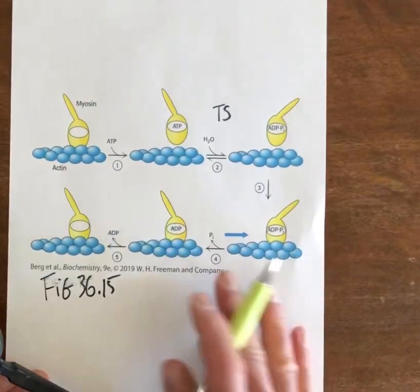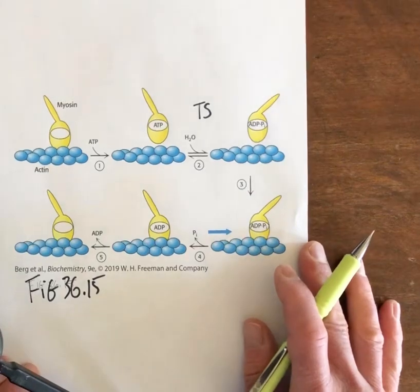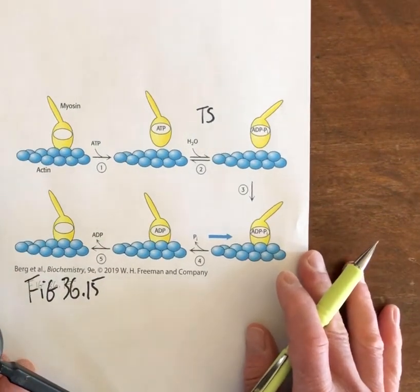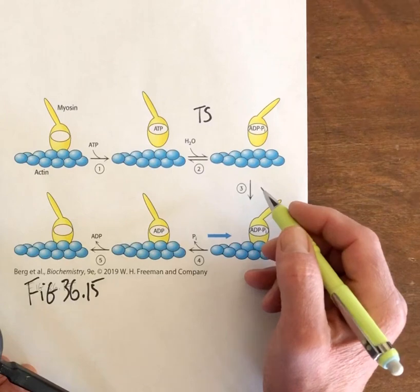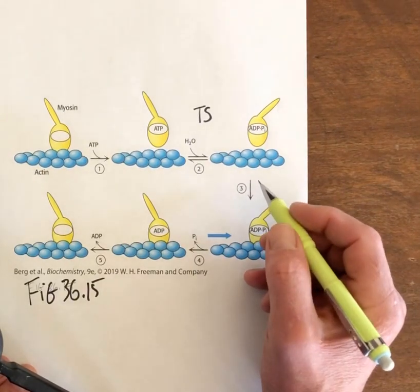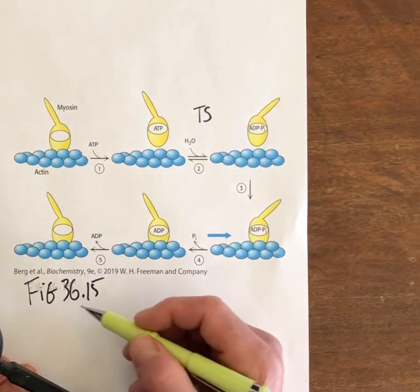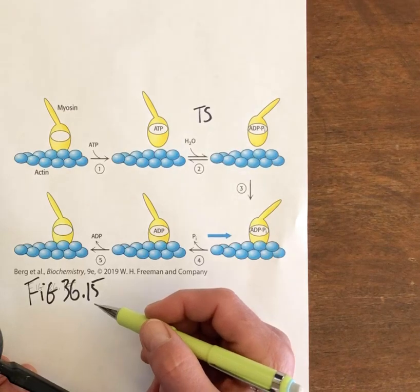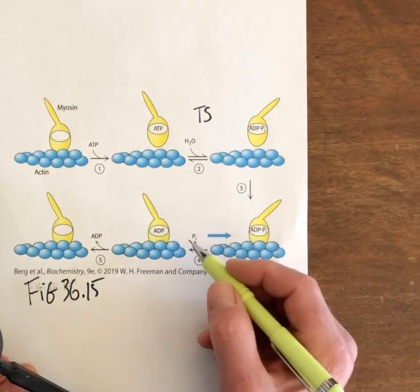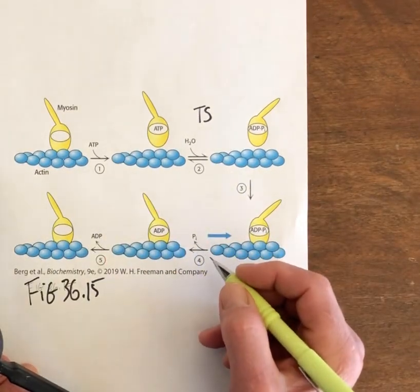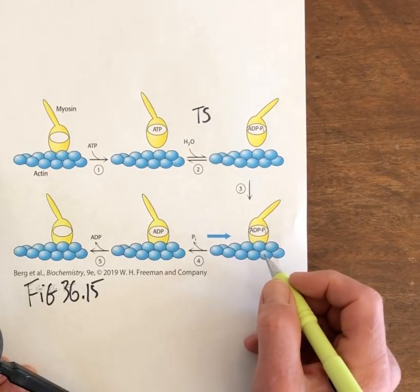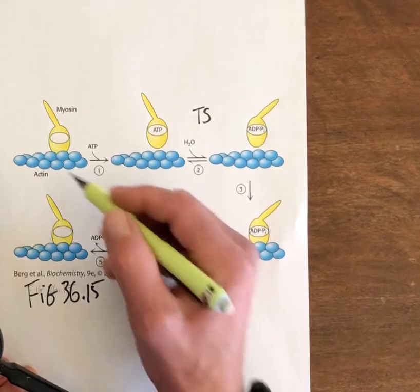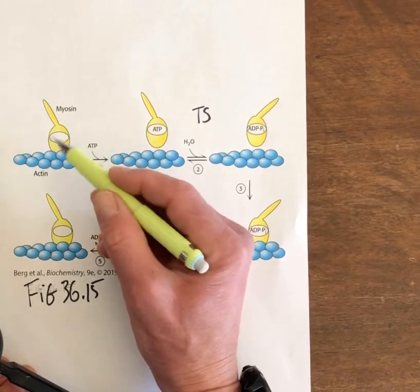So how does this all give us a model for walking, and where is the power stroke during the whole process? Figure 36.15 tries to show all of the moving parts, emphasizing where we actually do work as we walk along the actin filament. Myosin is originally nucleotide free.